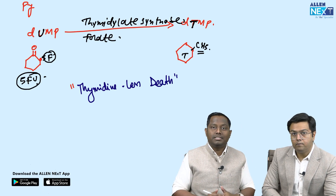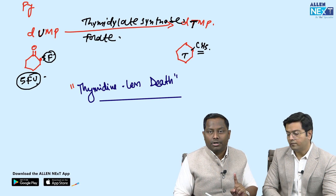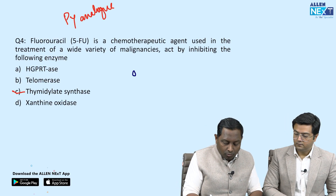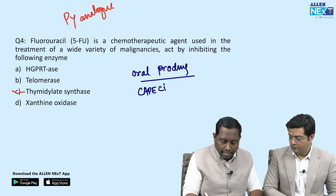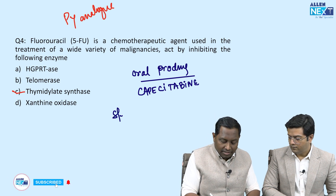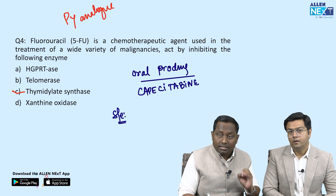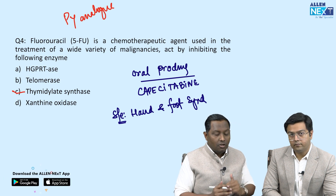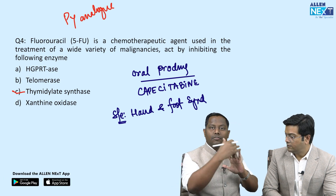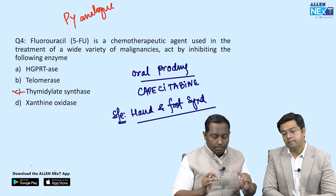If thymidylate synthase is inhibited, there is no thymidine formation. Without thymidine, the cell dies — this is called thymidine-less cell death. This was asked in a very recent 2023 examination. So 5-fluorouracil, a pyrimidine analog, causes thymidine-less death. The oral prodrug of 5-fluorouracil is capecitabine. An important specific side effect of 5-fluorouracil and capecitabine is hand-foot syndrome.